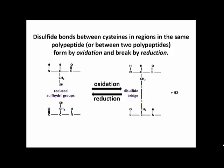One of the last things I want to talk about is disulfide bonds, which form between cysteines that happen to come close to one another in a polypeptide, or even between two polypeptides. You can have inter-chain disulfide bonds between two different polypeptides, or disulfide bridges — as we sometimes call them — can form between cysteines within the same polypeptide.